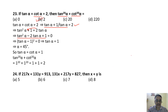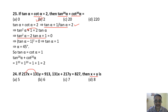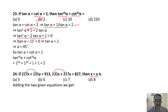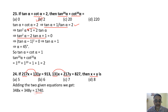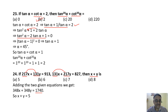Question 24 (implied): Adding two linear equations gives 348x + 348y = 1740, which simplifies by dividing by 348 to x + y = 5. The correct answer is option A.